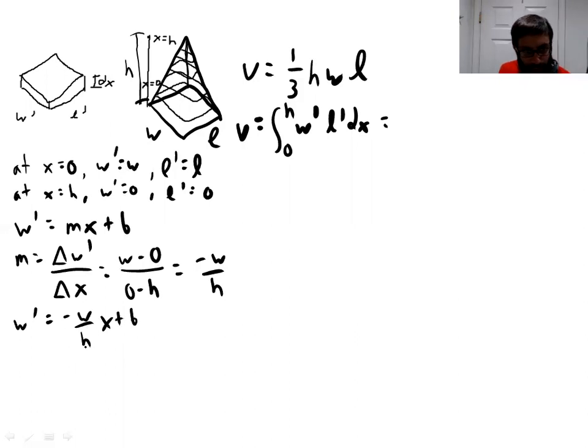And now we can solve for our intercept B. Plug in one of these points. So let's plug in the first point, W' when W' is W. Then we have an x equals 0. And so that immediately tells us that, well, B must be equal to W.